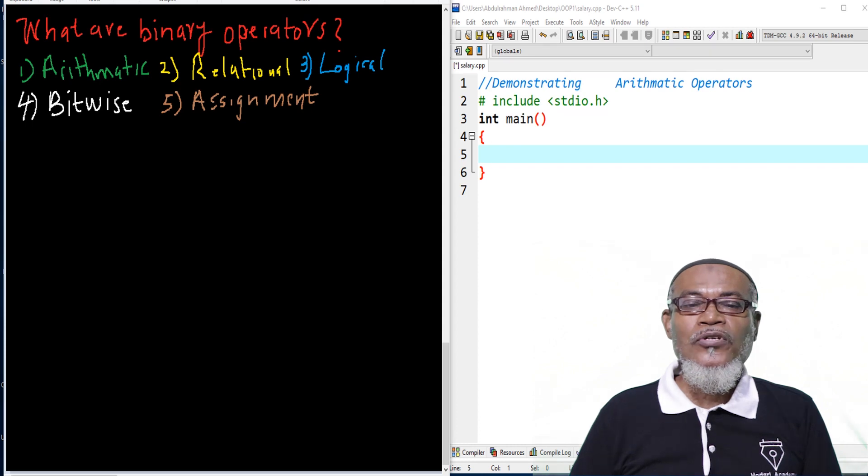In our last lesson, we talked about unary operators. Basically, we discussed the pre-increment, the post-increment, the pre-decrement, and the post-decrement.